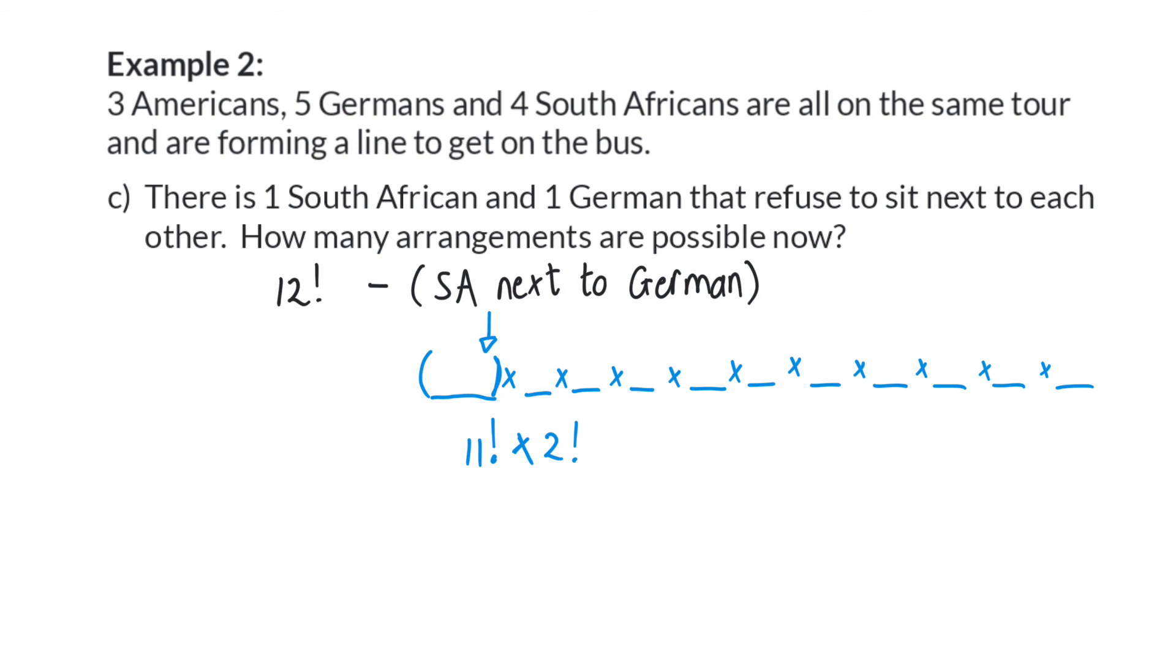This number of possibilities will now be subtracted from the total number. So my final calculation will be the 12 factorial giving me the total number of options minus this 11 factorial times 2 factorial and there are then 399,168,000 different arrangements left.